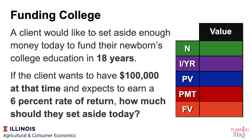Going through the problem, we can diagram out our first variable. We want the newborn to go to college in 18 years, so we're going to say N is 18. Next, the client wants to have $100,000 at that time, so we'll say $100,000 is Future Value, or FV. They expect a 6% rate of return, so we would say 6 is I.